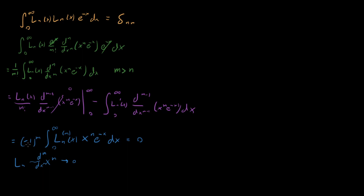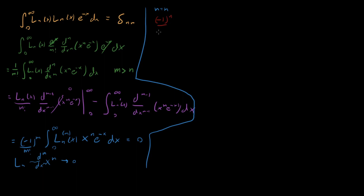The last thing we need to show is that when n equals m, we get 1. Let's start from the step we already reached. With n equal to m, we have (−1)^n over n factorial times the integral from 0 to infinity of the n-th derivative of L_n(x) times x^n e to the minus x dx. We need to figure out what the n-th derivative of L_n is, and I'll do that using the series definition for Laguerre polynomials.